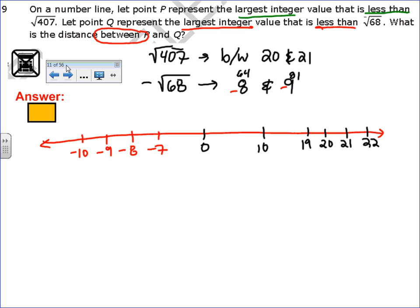Now, √407 is going to be in between here, right there. It says point P represents the largest value that's less than √407. The largest value that's less than it. Well, if this is 441, the square root of 441, and this is the square root of 400, the biggest number that's still less than 407 is 20. So this represents point P.